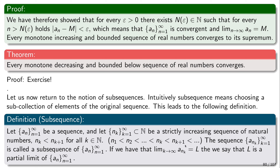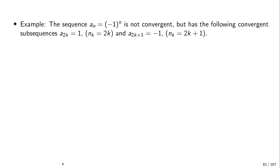If this subsequence converges to some limit l, then we say that l is a partial limit of the sequence a_n. For example, if we look at a sequence that can be decomposed into convergent sequences, one natural way would be to select a sequence of even indices.